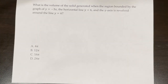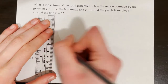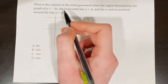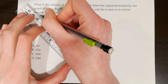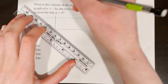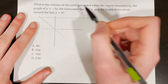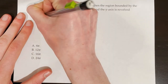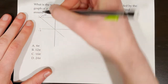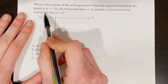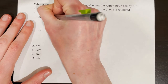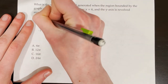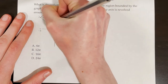What is the volume of the solid generated when the region bounded by y equals negative 3x, the horizontal line y equals 6, and the x-axis is revolved around the line y equals 6? Sketch the line y equals negative 3x passing through the origin. Plugging y equals 6 into negative 3x gives x equals negative 2, so the intersection is at (negative 2, 6). That enclosed region is revolved around y equals 6, with one radius going vertically and one disk sketched in.